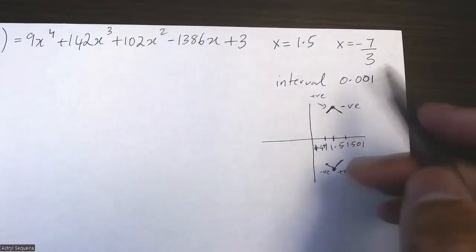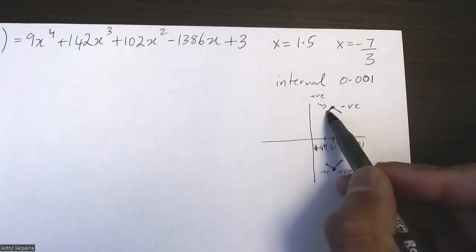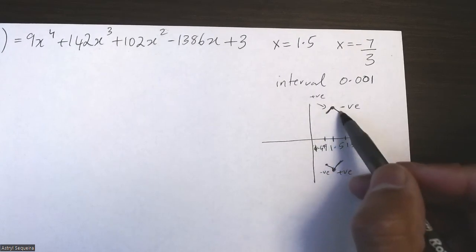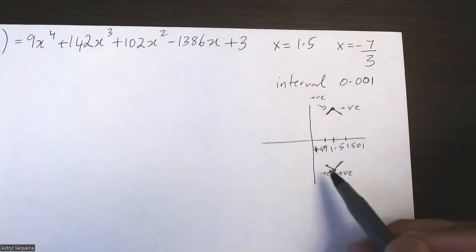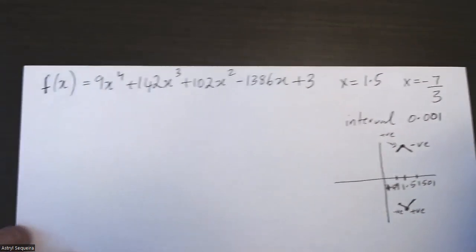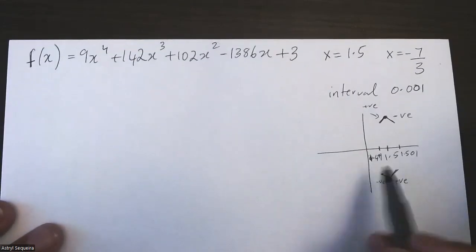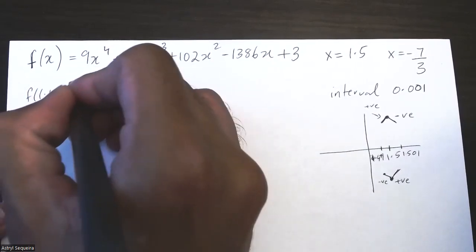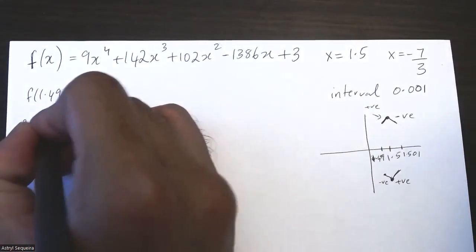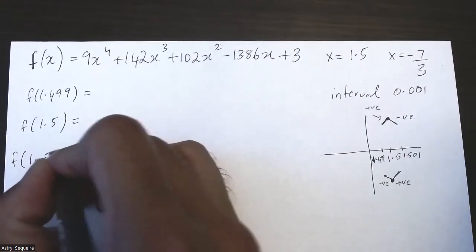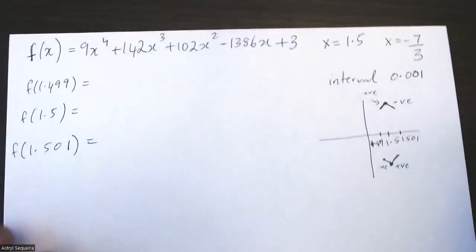Whereas if the slope before is negative and after is positive, we can prove it's a minimum. That's how you use instantaneous rates of change. If the slope before is positive 0.5, the slope after should be negative 0.5, proving it's a maximum because they'll have identical slopes on opposite sides. Now let's do the steps — we'll find f of three values: f(1.499), f(1.5), and f(1.501).